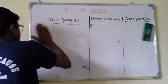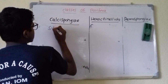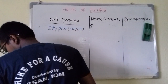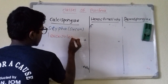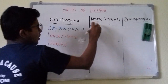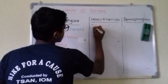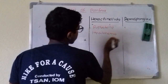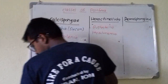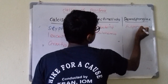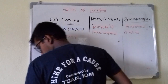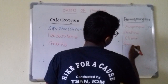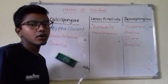Now dealing with examples: in Calcispongia — Scypha (Sycon), Leucosolenia, and Grantia. In Hexactinellida — Euplectella and Hyalonema. In Demospongia — Euspongia, Chalina, Cliona, and Spongilla.